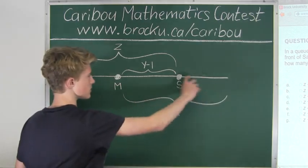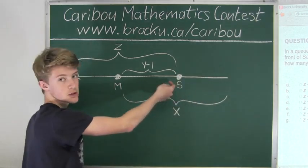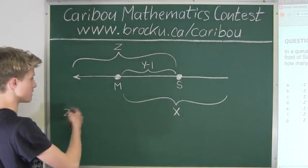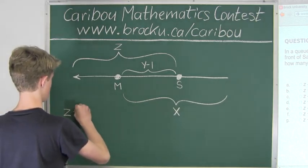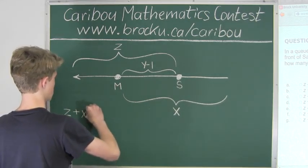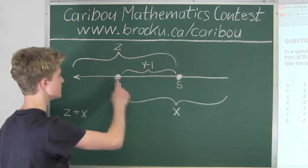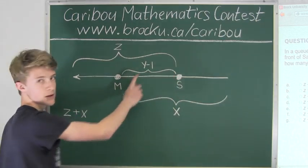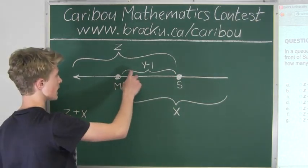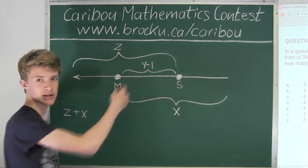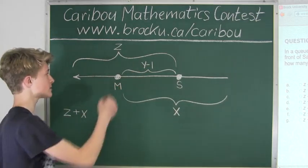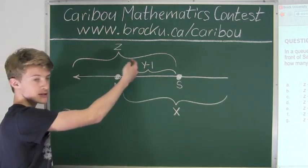And we know that X covers this area, including Sam, which we need, so we would add Z plus X. Now we can see that Z and X overlap in the middle. So we have added Y minus 1 twice. So we want to subtract 1 times Y minus 1.